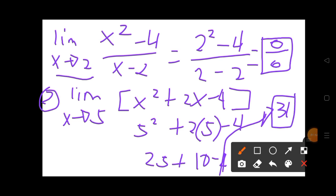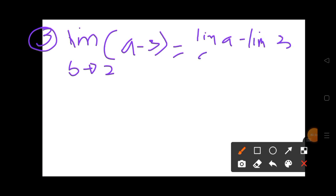We have 31. So, another example, example number 3, limit of a minus 3, b approaches to 2. Our limit of a minus limit of 3, a approaches to 5, is equal 5 minus 3, so that will be 2.